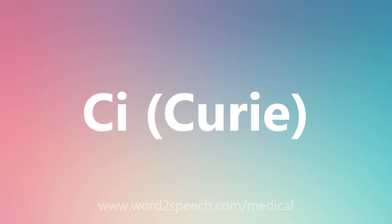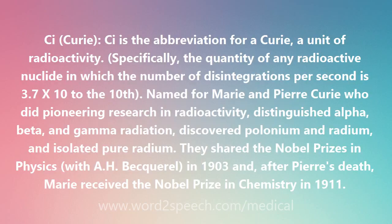CI, Curie. Curie — CI is the abbreviation for a Curie, a unit of radioactivity. Specifically, the quantity of any radioactive nuclide in which the number of disintegrations per second is 3.7 x 10 to the 10th.